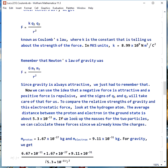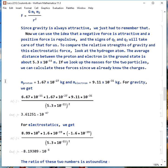The distance between them in the ground state is about 5.3 × 10^-11 meters. We can look up the masses for the two particles. We can find the gravitational force between them, which is a problem we could have done last semester, and we get this ridiculously small 3.61 × 10^-47 newtons.